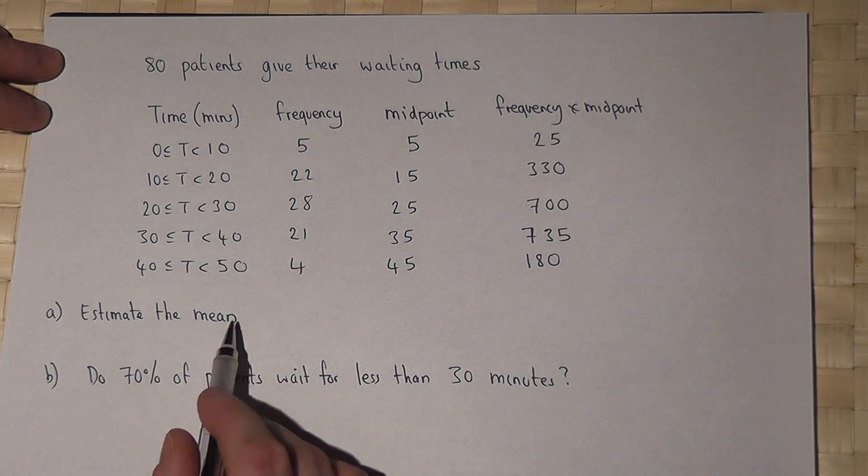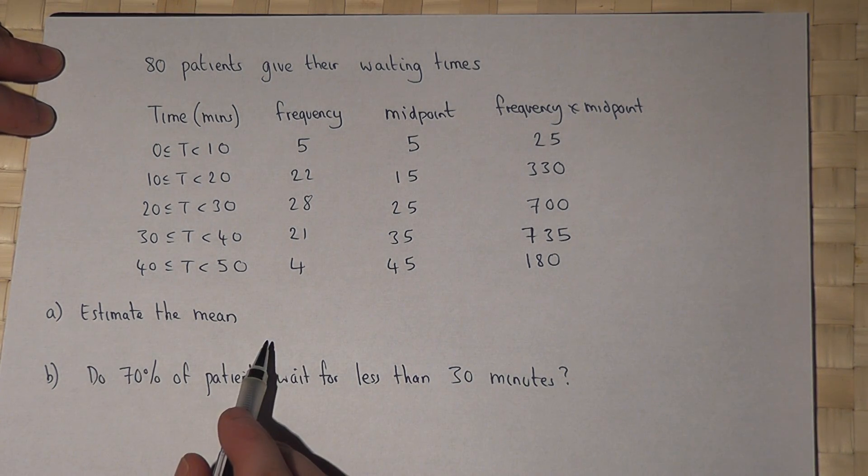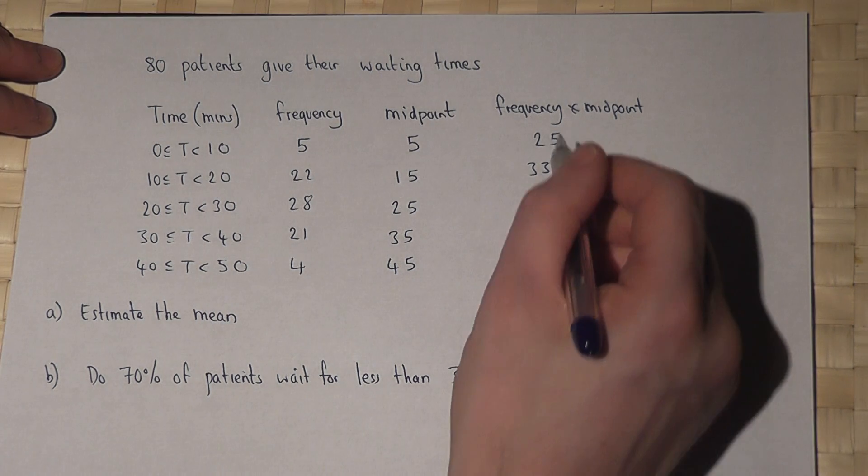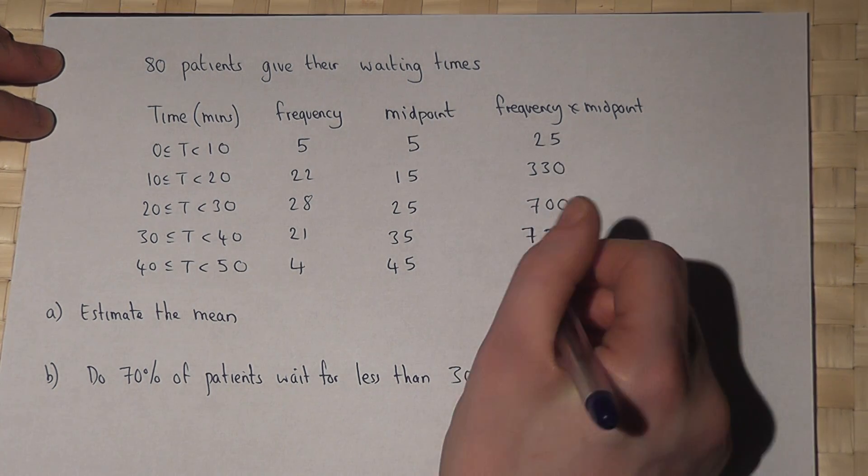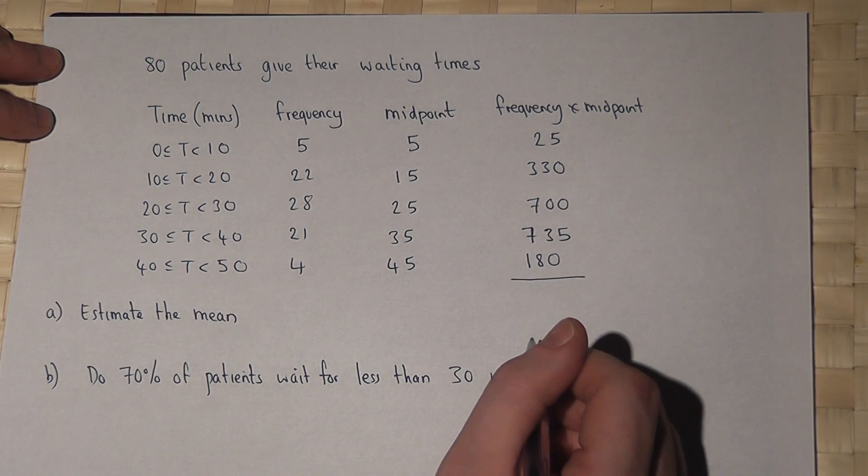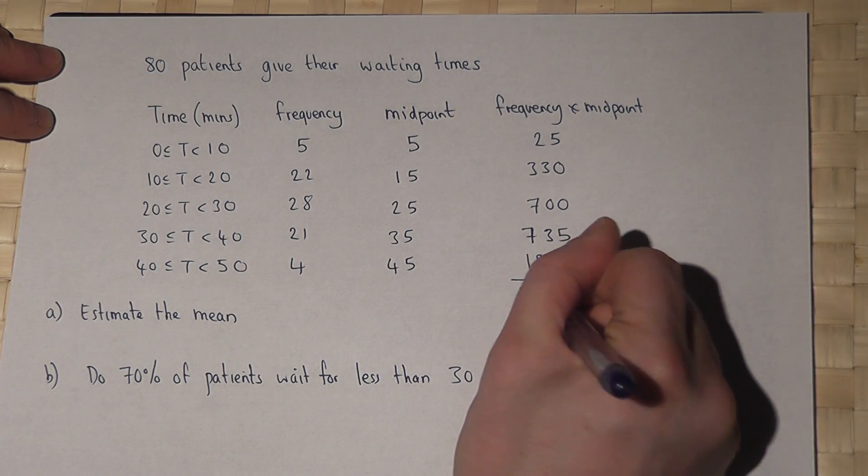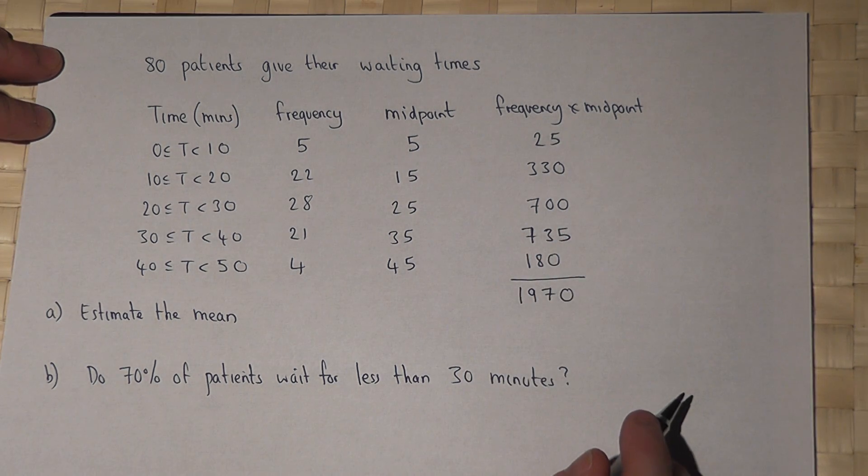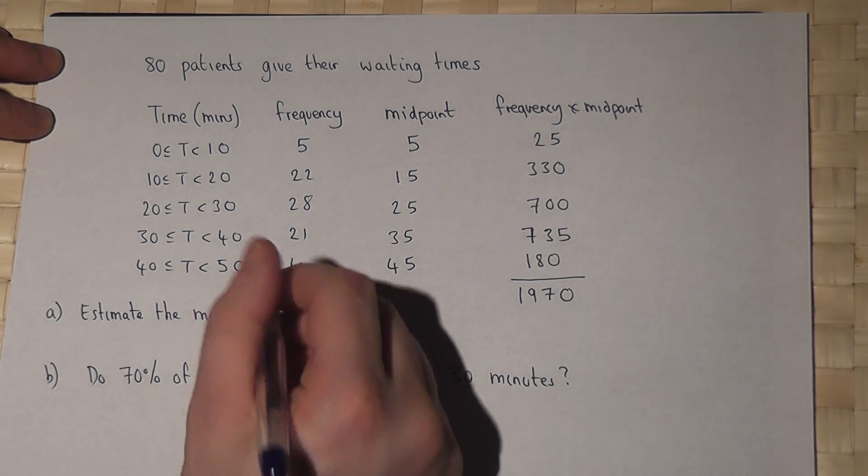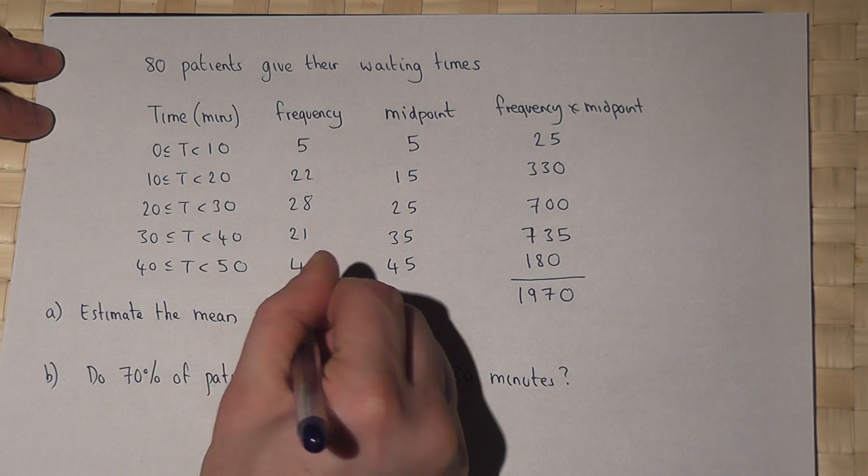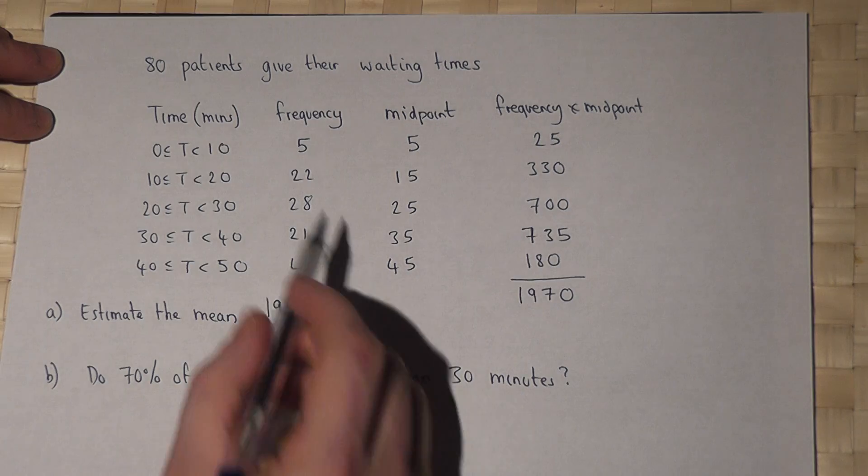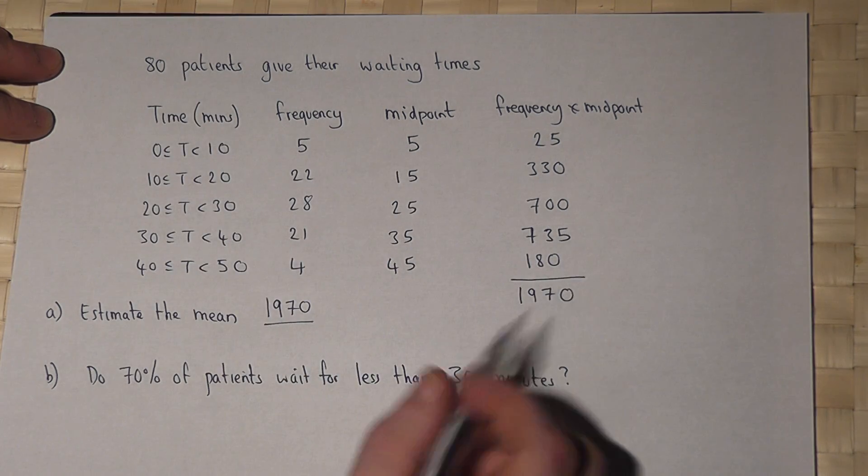So to find the mean or to estimate the mean we must work out the total waiting time. So if we add together all these numbers here we find the total waiting time is around 1970 minutes. So to find the mean we'll do the total waiting time divided by the number of patients which is 80.